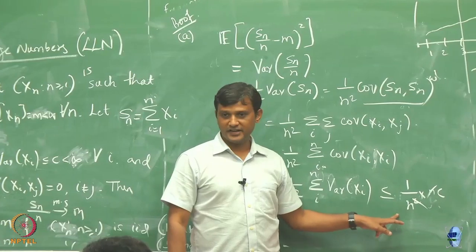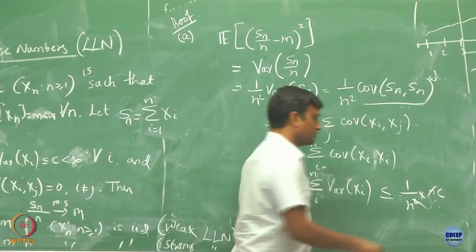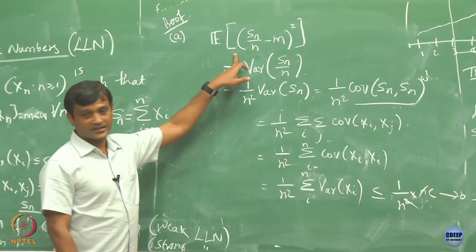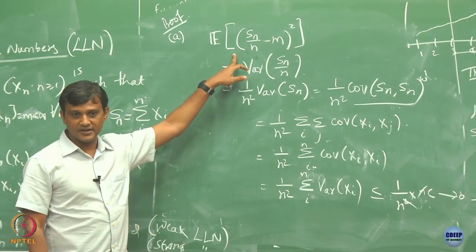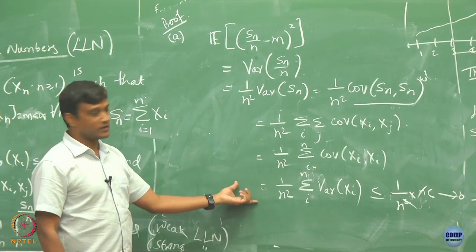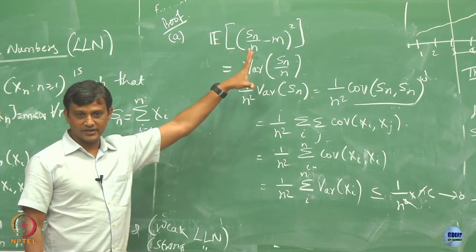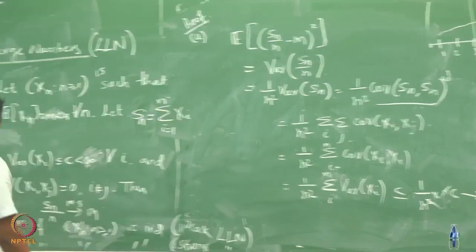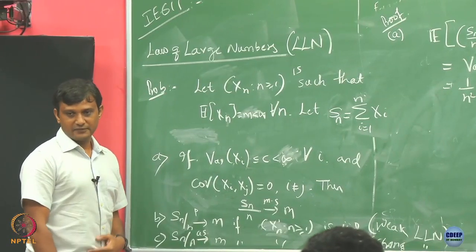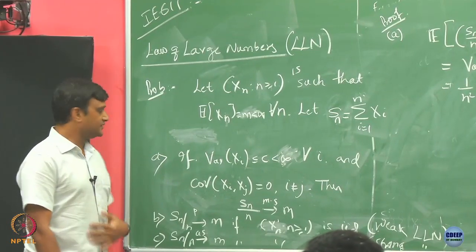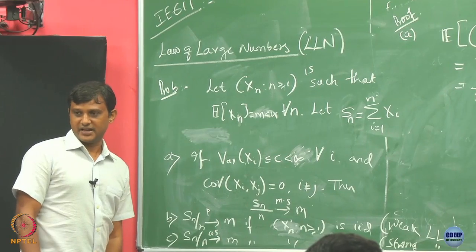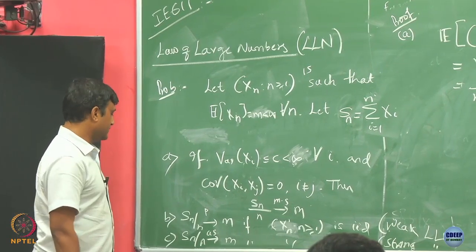So the expression is C by n, and since C is assumed to be finite, as n goes to infinity this goes to 0. Therefore S_n by n converges to m in the mean squared sense. As long as variances are bounded, means are the same, and random variables are pairwise uncorrelated, we have convergence in mean squared sense.